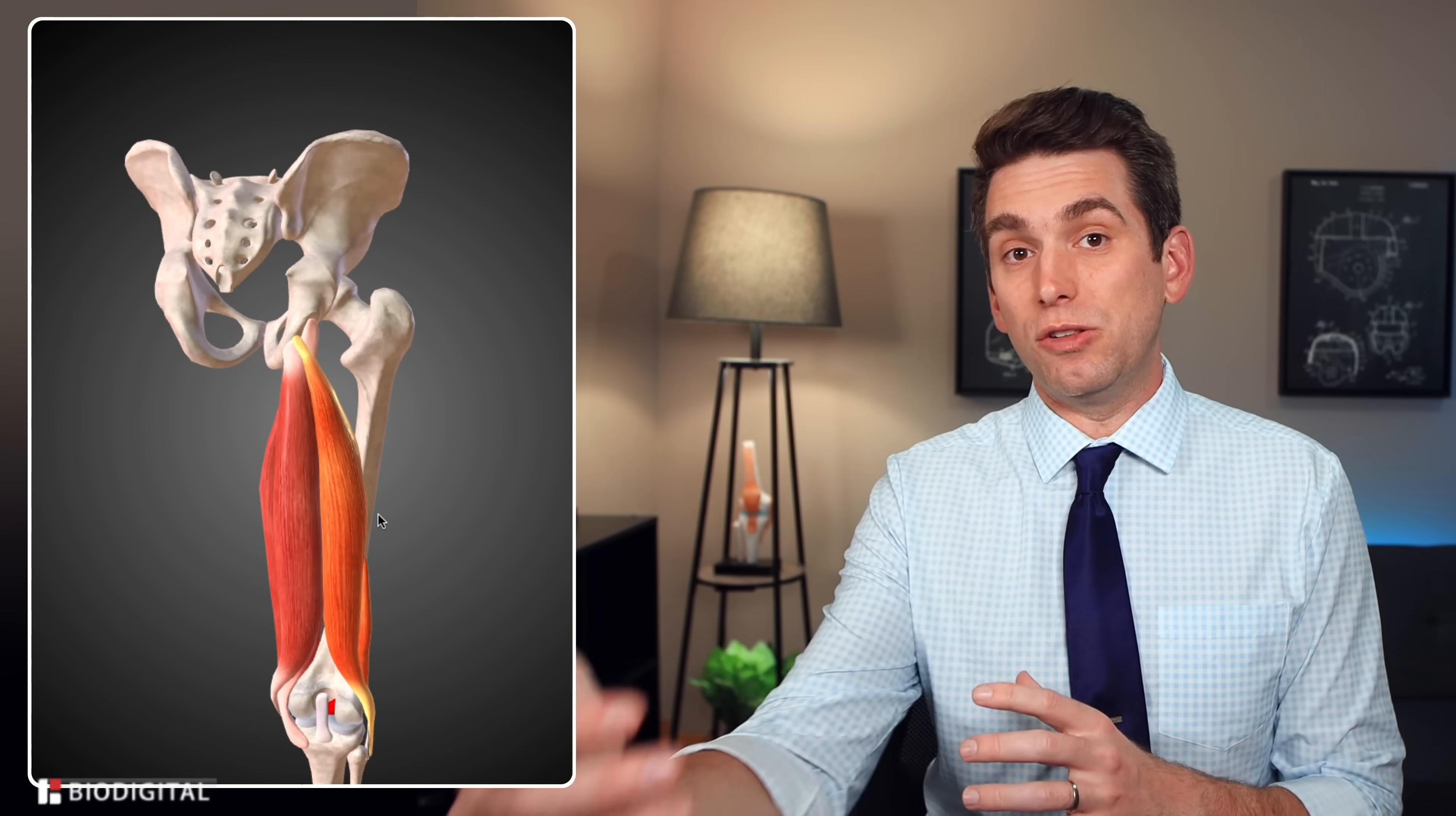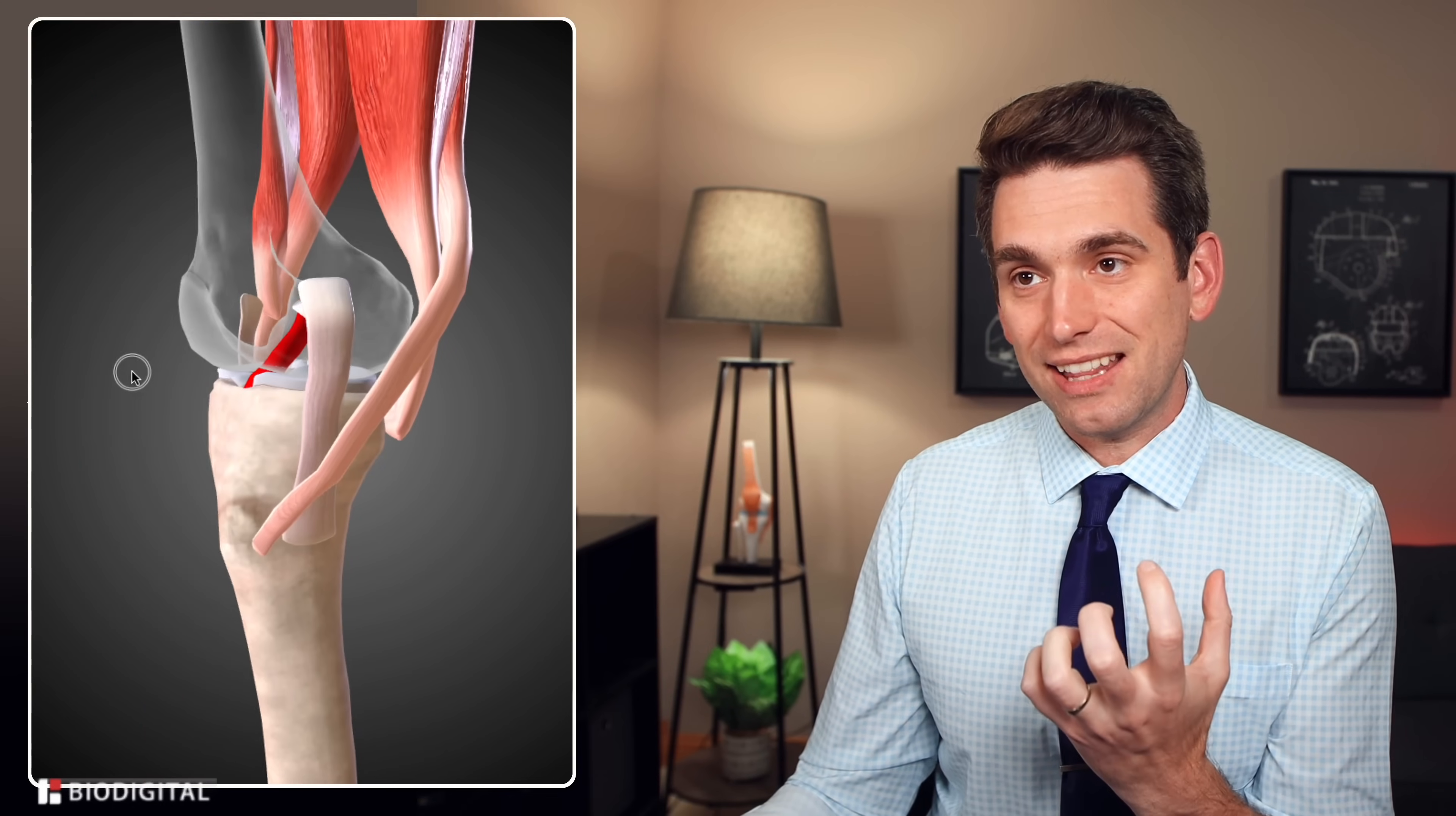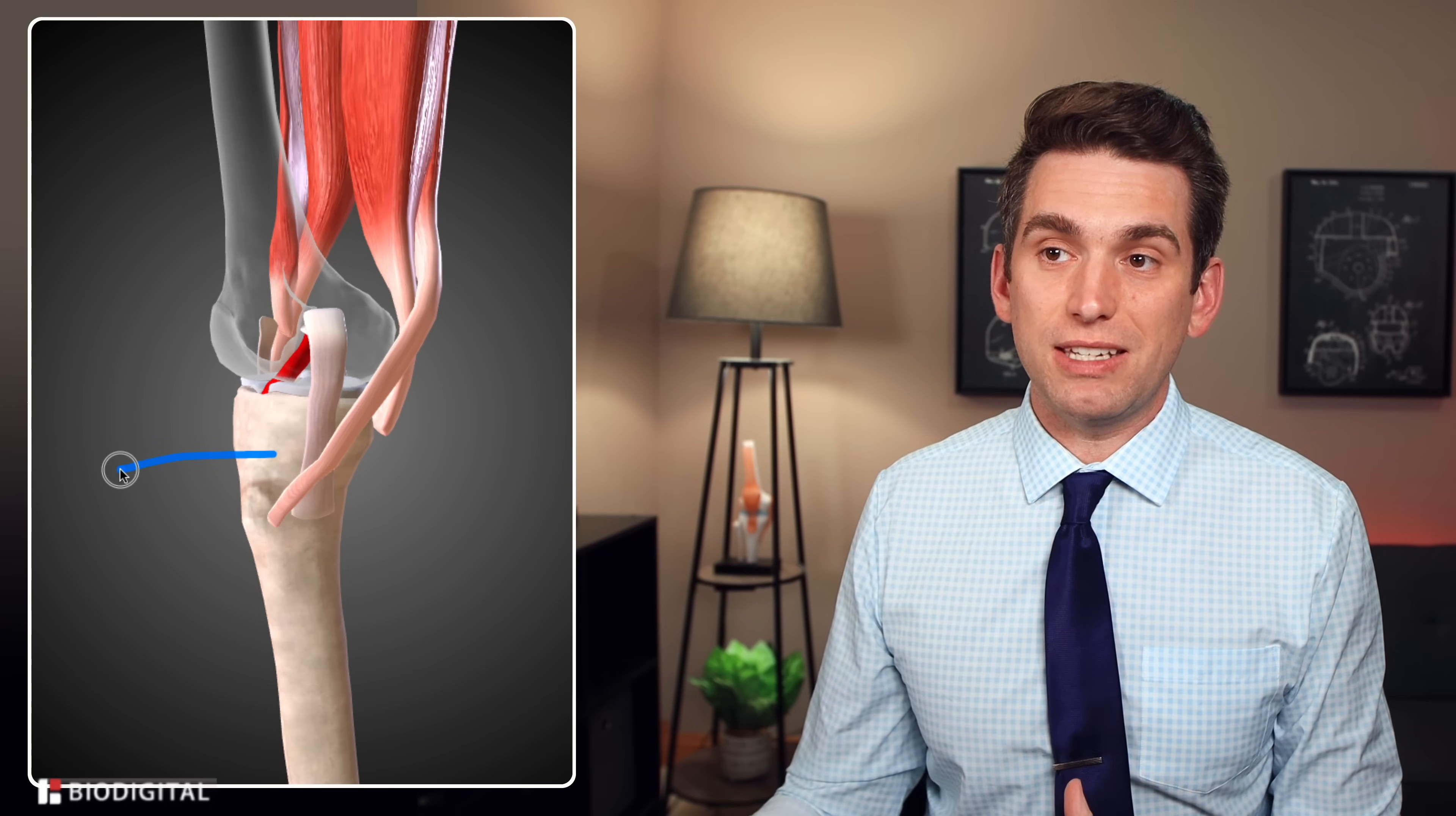The second concern here is how the hamstring muscle supports the ACL which is of course important for a guy who's returning quickly from an ACL surgery if I hide the outline of the femur a little bit in red back there we can see the ACL that anterior cruciate ligament which sits in the inside of the knee and runs from the back of the femur to the front of the tibia.